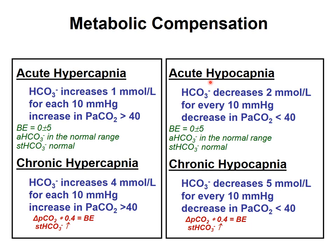In acute hypocapnia, CO2 decrease lowers actual bicarbonate by 1–2 mmol/L, still within normal range, with standard bicarbonate unchanged. In chronic hypocapnia with kidney compensation, the kidney excretes bicarbonate more aggressively, making bicarbonate fall further below normal. Similarly, the expected change is: delta CO2 × 0.4 = base excess.